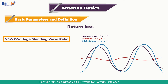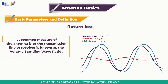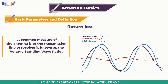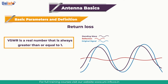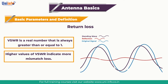Fourth is VSWR. An antenna's impedance is important for minimizing impedance mismatch loss — a poorly matched antenna will not radiate power. A common measure of how well matched the antenna is to a transmission line or receiver is known as the Voltage Standing Wave Ratio, or VSWR. VSWR is a real number always greater than or equal to 1. A VSWR of 1 indicates no mismatch loss — the antenna is perfectly matched to the transmission line. Higher values of VSWR indicate more mismatch loss.